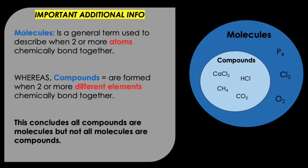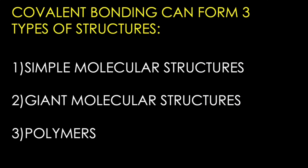It's very useful to know the difference between molecules and compounds. Molecules is a general term used to describe when two or more atoms chemically bond together, whereas compounds are formed when two or more different elements chemically bond together. For example, phosphorus P4 is a molecule because it has two or more atoms. Calcium chloride CaCl2 is a compound because it has two different elements — calcium and chlorine — but it can also be a molecule as it has three atoms altogether. This concludes that all compounds can be molecules but not all molecules can be compounds.